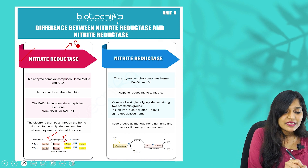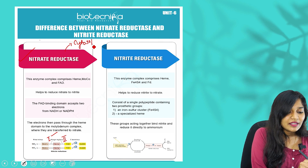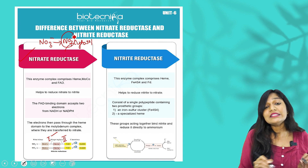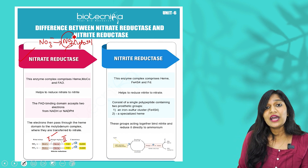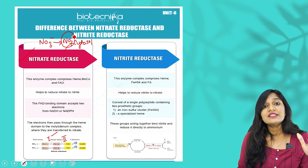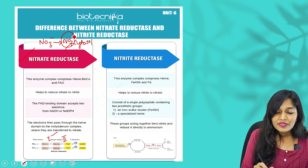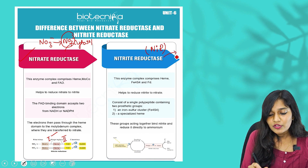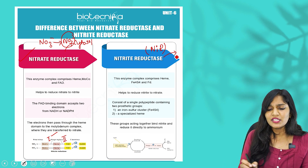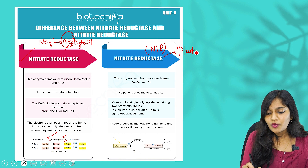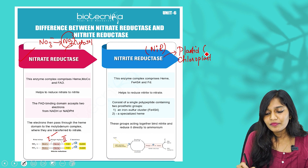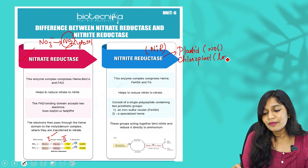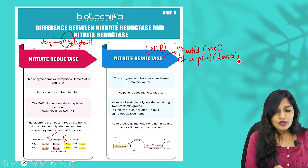This reaction takes place in the cytosol, where nitrate is converted into nitrite. However, nitrite is very toxic in nature, so it must be immediately transported to the plastids or chloroplasts. Nitrite reductase, written as NiR (capital N, small i, capital R), acts there. Both of these processes together are called nitrification. The reaction takes place in plastids — in roots — or in chloroplasts — in green parts such as leaves.